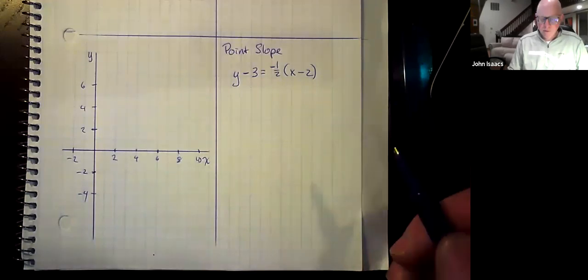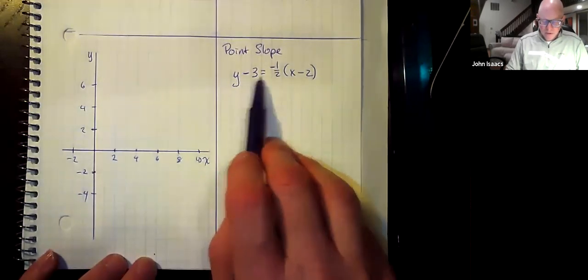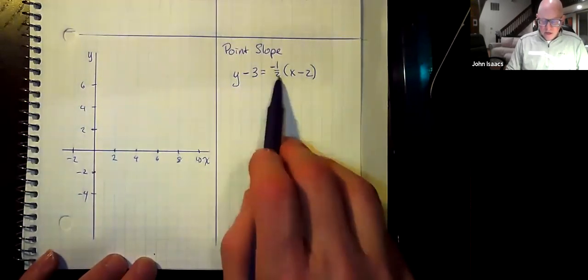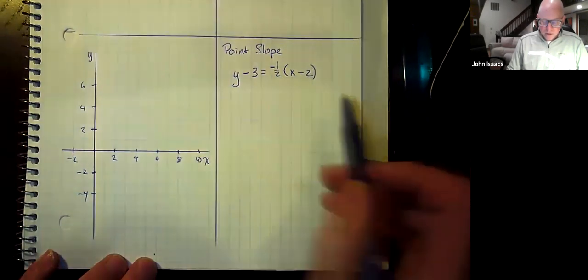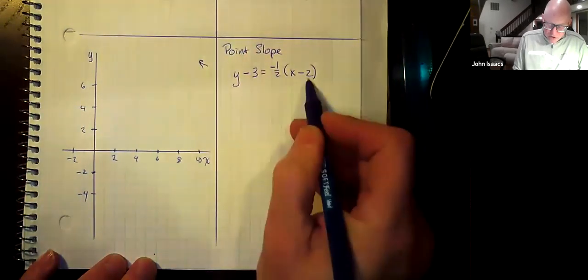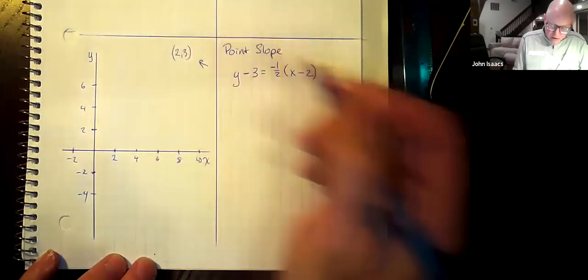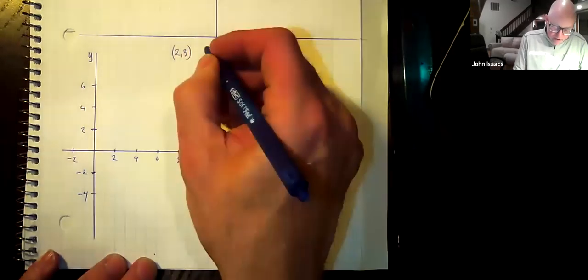I just want to go over an example. So here we have y minus 3 equals negative one-half times x minus 2. From this, we get a point of 2, 3 somewhere on the line, and we have a slope of negative one-half.